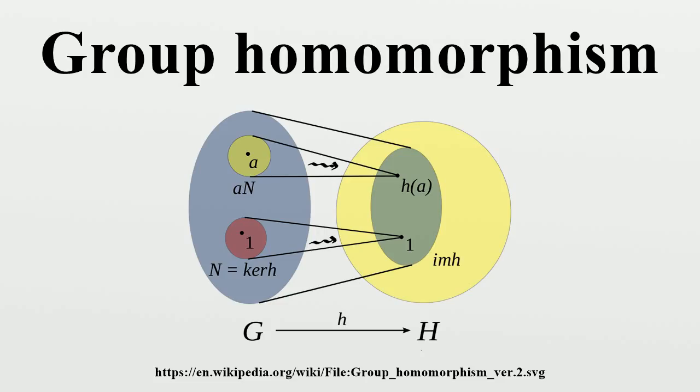Types of group homomorphism: Monomorphism - a group homomorphism that is injective, i.e., preserves distinctness.